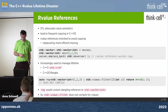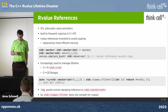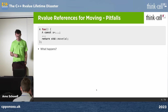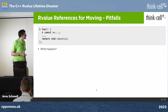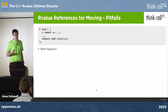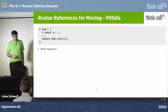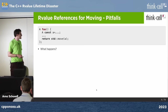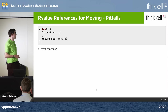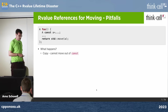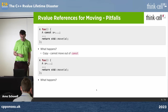Before going more into details on R-values for lifetime, let's talk about R-values for moving and some pitfalls. You have a const A in your local function and you try to move it to efficiently return it. Well, if A is const, you can't move out of a const — so this doesn't work. Instead, you probably want to make it non-const and then move it. But is that the best we can do? The answer is no, because there is named return value optimization (NRVO).